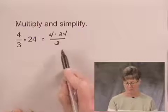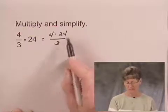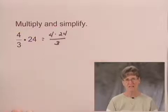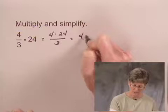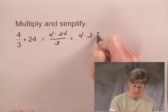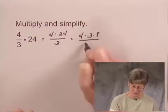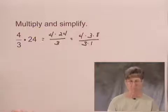And we want to simplify this fraction if we can. We see that 24 has a factor of 3 and there's a factor of 3 in the denominator. So I'm going to rewrite the numerator as 4 times 3 times 8. And I'm going to write the denominator now as 3 times 1.